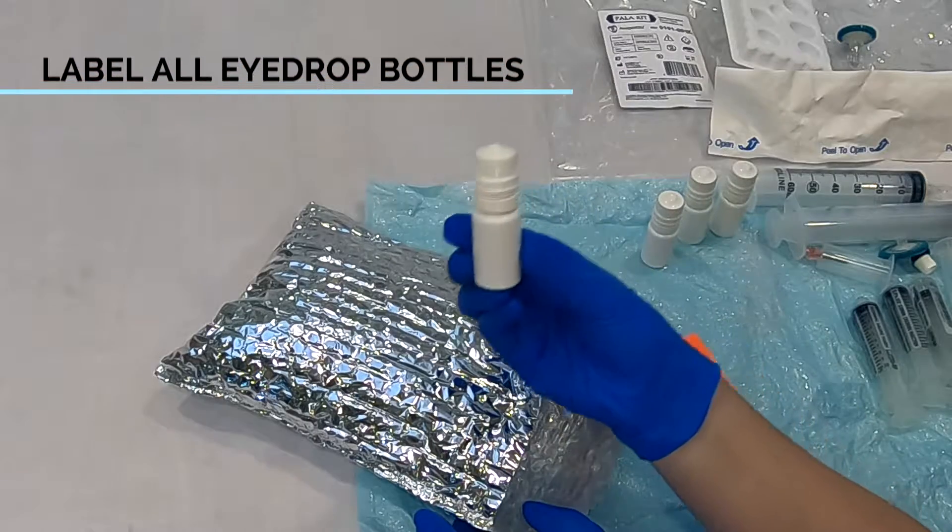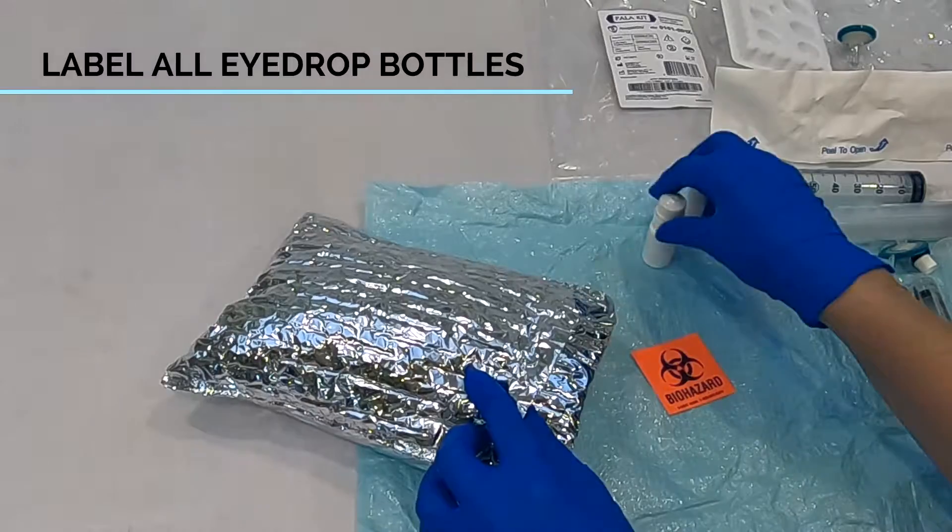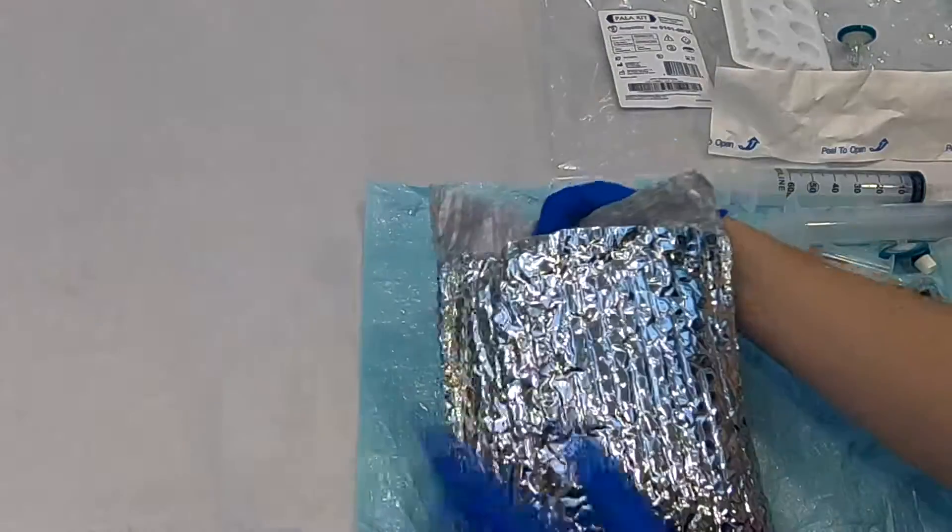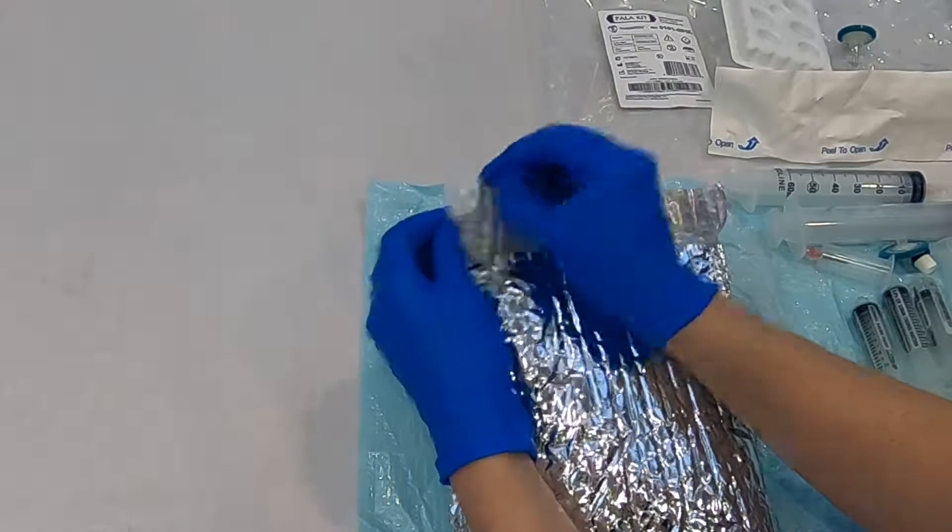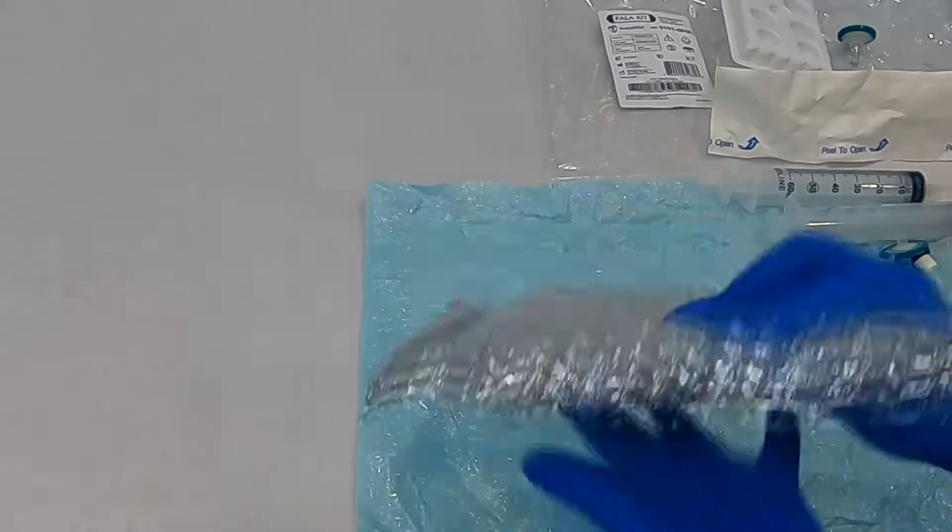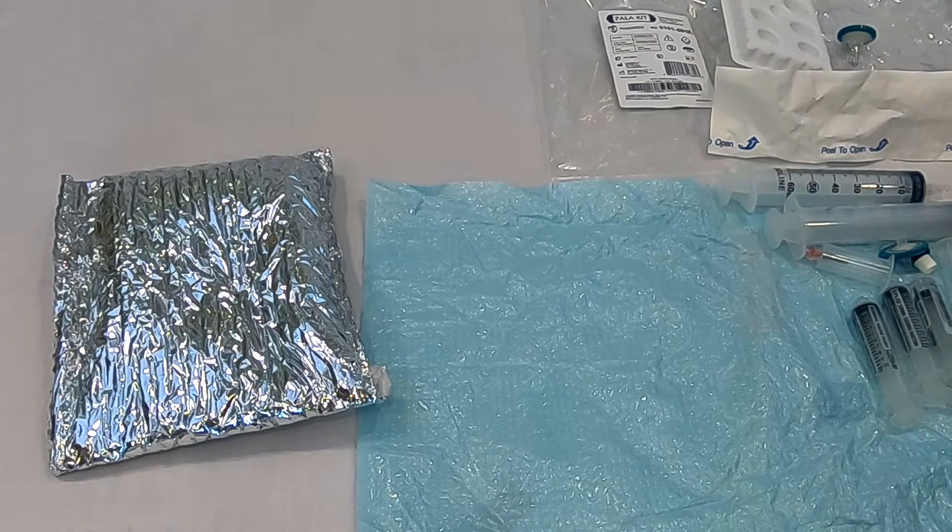Clearly label the bottles following institutional protocols. Insert the eyedrop bottles and one provided frozen freezer pack into the insulated bag. Doses can be frozen in the eyedrop bottles. Close the bag, seal, and deliver to the patient. Be sure to provide the patient instructions relative to the storage and use of serum tears, as well as any warnings and cautions.